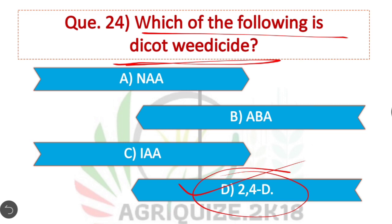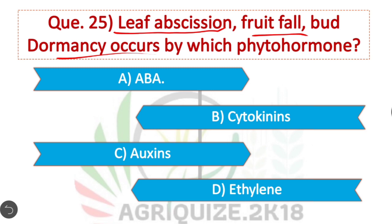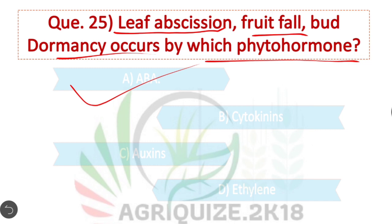Question 25: Leaf abscission, fruit form, bud dormancy — these occur by which phytohormone? Option A is correct: Abscisic acid.